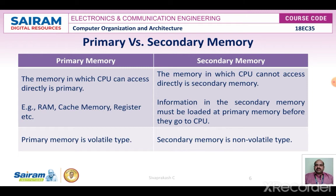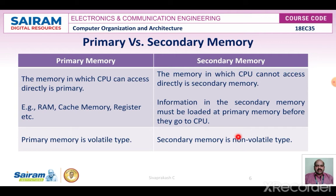Primary memory versus secondary memory: primary memory is the memory which the CPU can access directly, whereas memory the CPU cannot access directly is called secondary memory. Examples of primary memory include RAM, cache memory, and registers. Secondary memory must be loaded into primary memory before it can go to the CPU. Primary memories are volatile whereas secondary memories are always non-volatile.